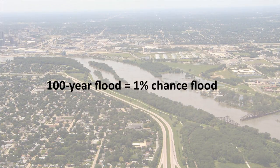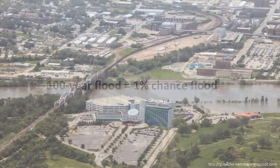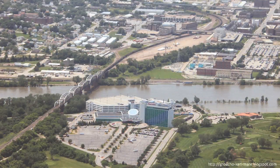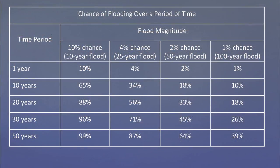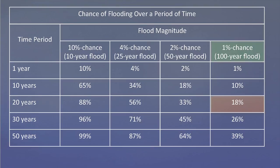The 100-year flood is also referred to as the 1% chance flood, which is a more appropriate description of the risk of such a flood occurring in any given year. A river could experience a 100-year flood twice in the same year, three times in 10 years, or only once over the course of 250 years. The table on screen helps explain the concepts of flood probability and risk. For example, while there is a 1% chance of a 100-year flood occurring in any given year, there is an 18% chance that such a flood will occur within any given 20-year period, and a 26% chance that such a flood will occur during the life of a 30-year mortgage.